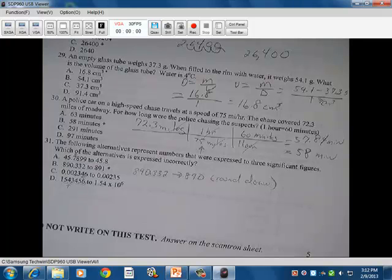30, police car at high speed chase traveling at a speed of 75 miles per hour. Chase covers 72.3 miles of the roadway for how long were the police chasing the suspects. And that gives you the one hour to 60 minute conversion factor there. So you have the given, which is the 72.3 miles of the chase. You have your conversion from the given as well. How many miles per hour were they traveling? So miles gets converted to hours. And then you use your conversion process of going from hours to minutes. And so then the miles are going to cancel, the hours are going to cancel, and you're left with minutes.